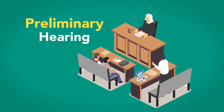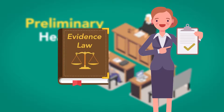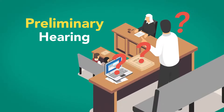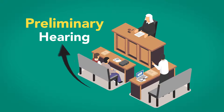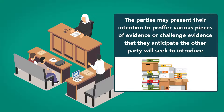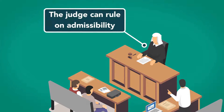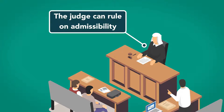Preliminary Hearing. Before delving into the specific evidence rules, let's take a moment to understand some of the nuances of evidence law. If it is unclear whether evidence can be admitted at trial, its admissibility or lack thereof may be determined at a preliminary question hearing. The parties may present their intention to proffer various pieces of evidence or challenge evidence that they anticipate the other party will seek to introduce. This proceeding is conducted in front of the judge but not in front of the jury, and the judge can rule on admissibility.